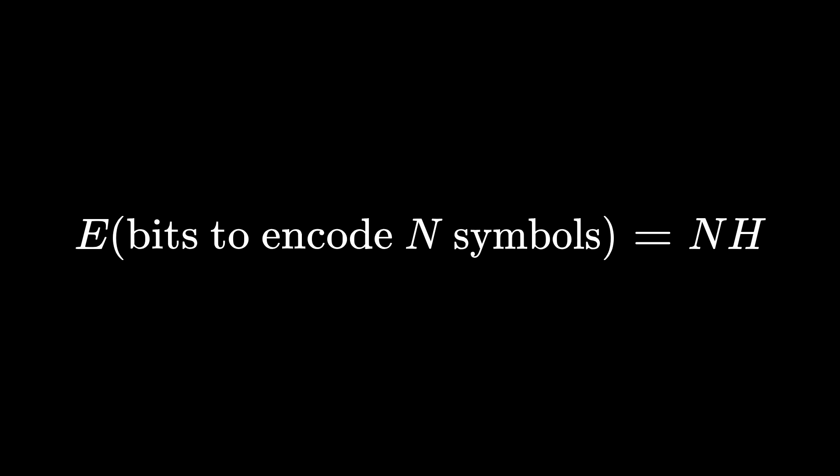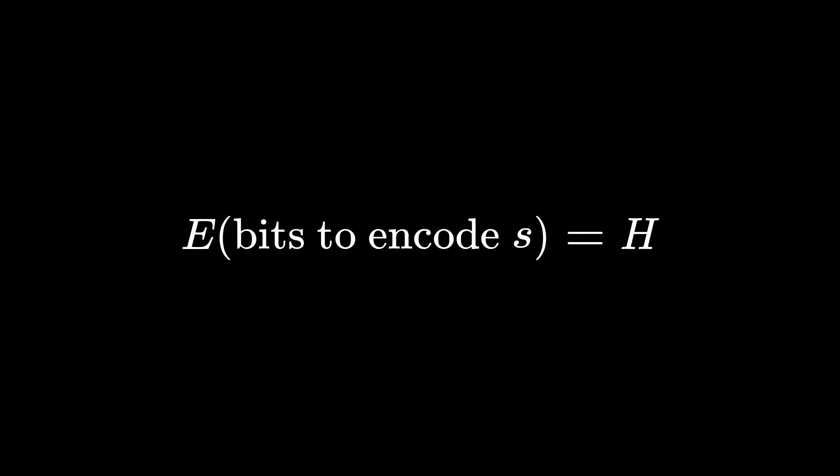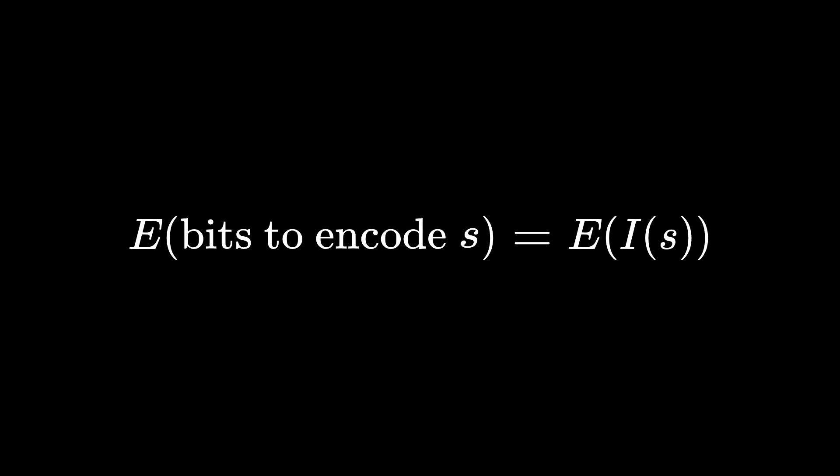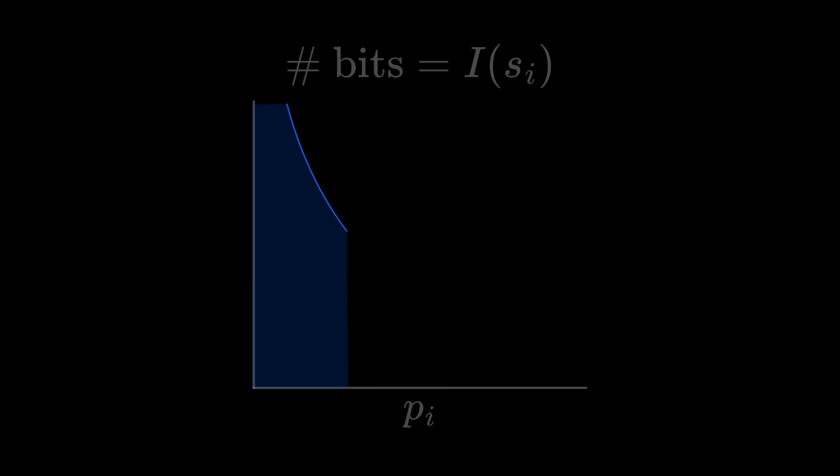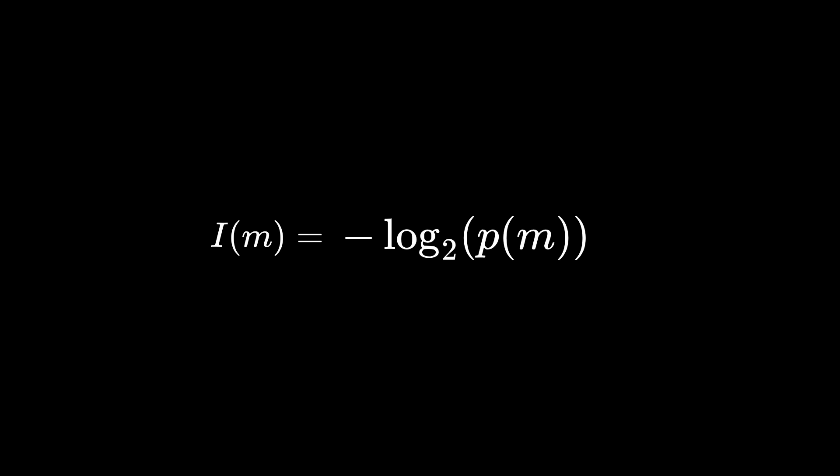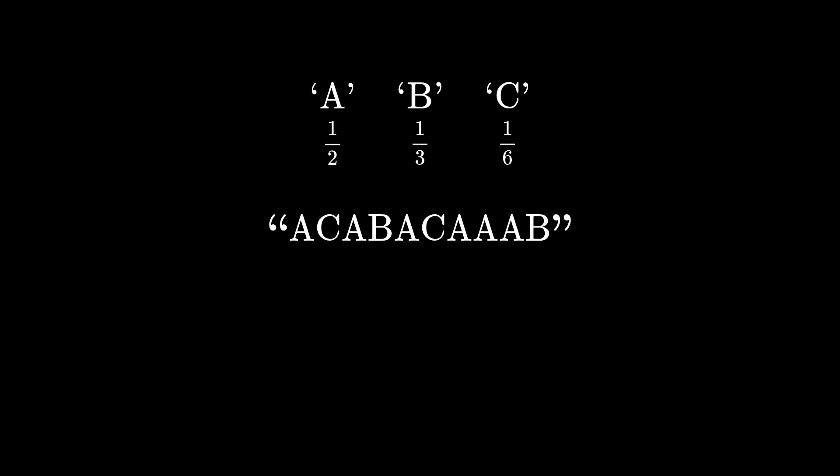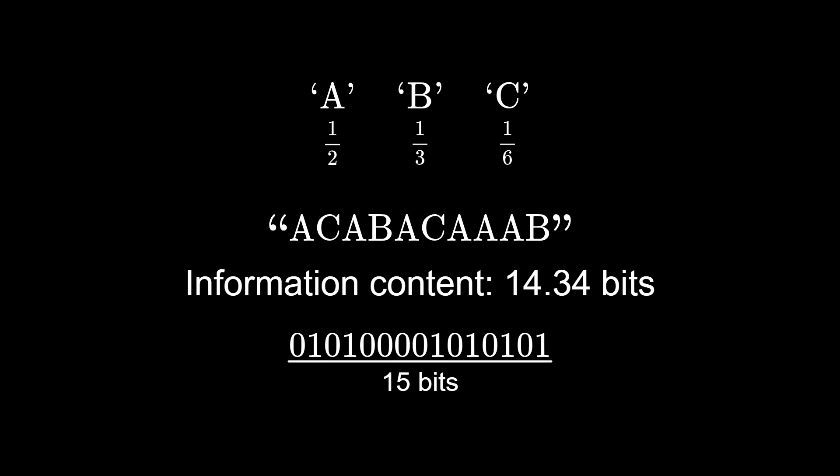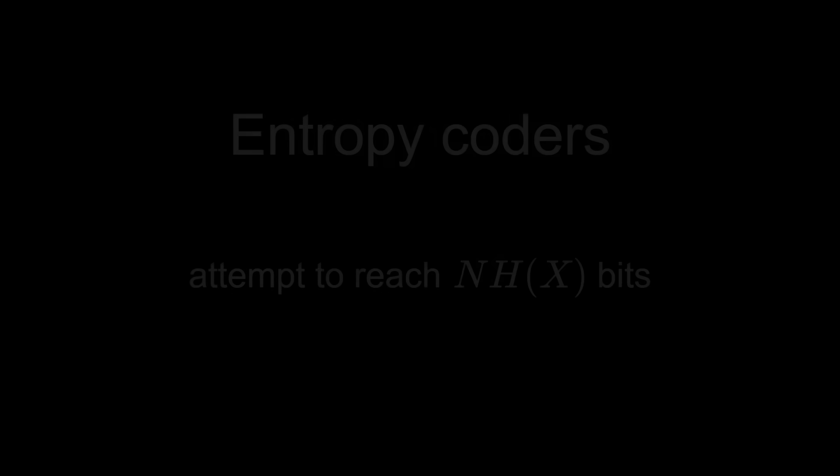Our goal is to encode each symbol into h bits, on average. So we should encode any symbol with information content i into i bits. And this intuitively makes sense, we want to encode more frequent symbols with fewer bits. A nice fact is that the information content of a message is equal to the sum of the information contents of its symbols, conditioned on the previous symbols. So in general, anything with information content i should be encoded into i bits. Compression algorithms that try to do this are called entropy coders.